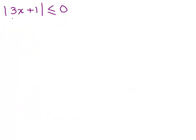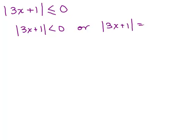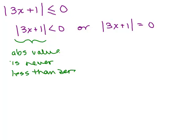Here's the first special case: the absolute value of 3x plus 1 is less than or equal to 0. Notice this is not a positive number. When we first defined how to solve these absolute value inequalities with less than, it was a positive number — 0 is not positive. So let's think about what this is really saying: the absolute value of 3x plus 1 is either less than 0 or equal to 0. But could you take the absolute value of something and get something less than 0? That's absolutely impossible, because when you take the absolute value of something, it's positive — absolute value is never less than 0.